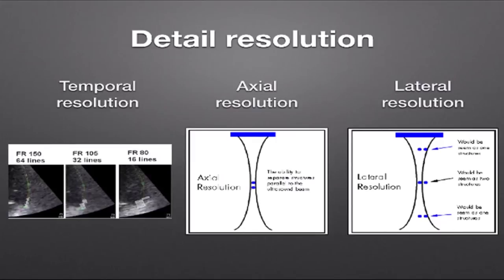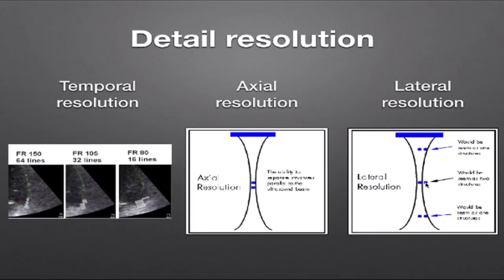The focal zone is critical for lateral resolution. Trying to differentiate two structures in the near field or far field will make them appear as one, whereas in the focal zone the lateral beam thickness is narrowest, allowing two structures to be displayed as separate points. It's important to remember that axial resolution is always better than lateral resolution.